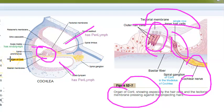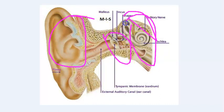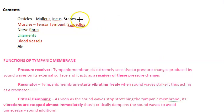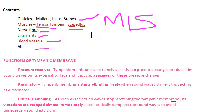We have covered the anatomy of the ear in depth. There are three parts: the outer ear, the middle ear, and the inner ear. In the middle ear you need to know the roof, the walls, and the floor. The bones in the middle ear are the malleus, incus, and stapes, along with muscles like tensor tympani and stapedius, nerve fibers, ligaments, and blood vessels.